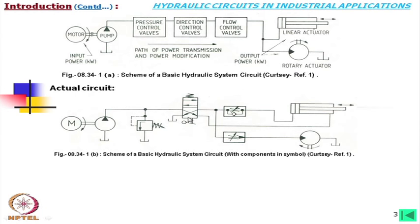Here we find a direction control valve. Looking into this symbol — if you know these symbols, which we have already learned — this is 4 by 2, meaning 4 ports and 2 positions. This is one position and this is another position. The spring on one side means it will assume only one position when we do not actuate the lever. In normal condition, there is a cross connection, meaning the flow is going in this direction and then this is being retracted.